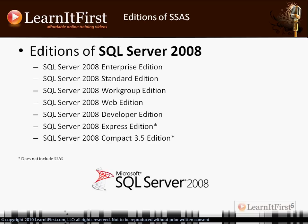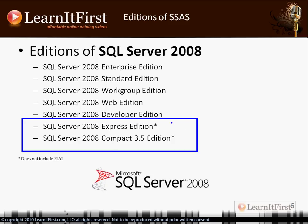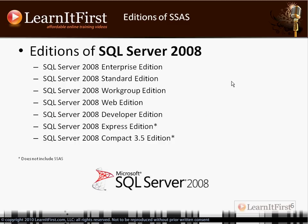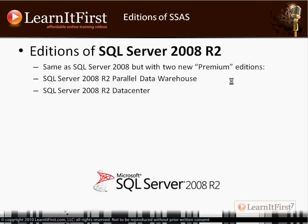Looking at the list, note the asterisks at the bottom — Express and Compact 3.5 do not include Analysis Services. There is no free version of Analysis Services. The first edition on the list that includes Analysis Services is the Developer Edition. For R2, the list is the same except for two additional products: Parallel Data Warehouse and Data Center.